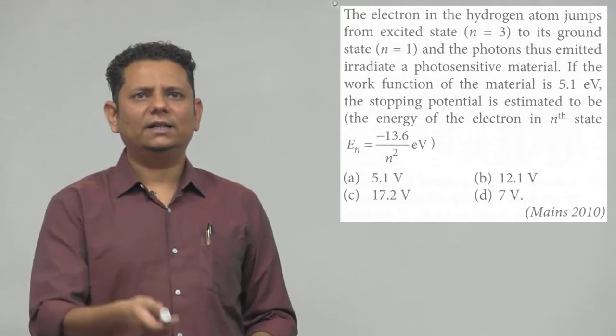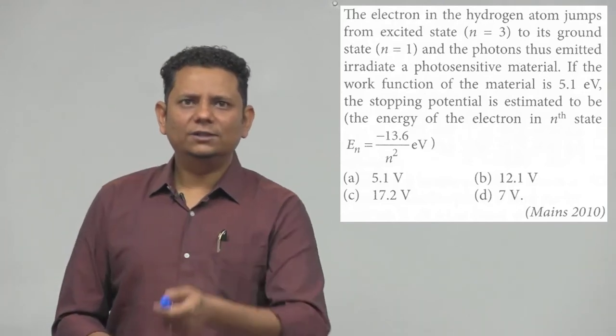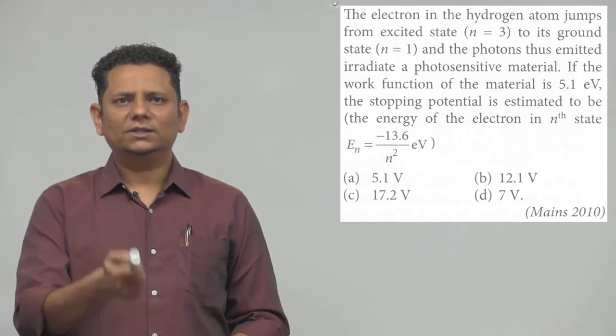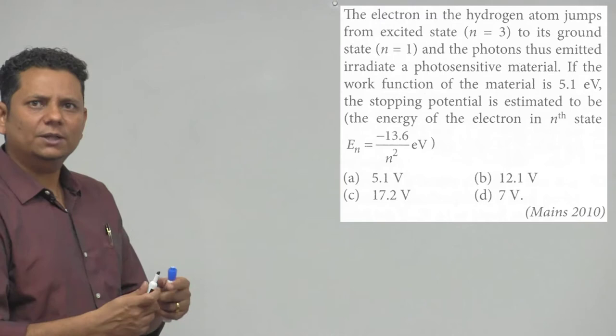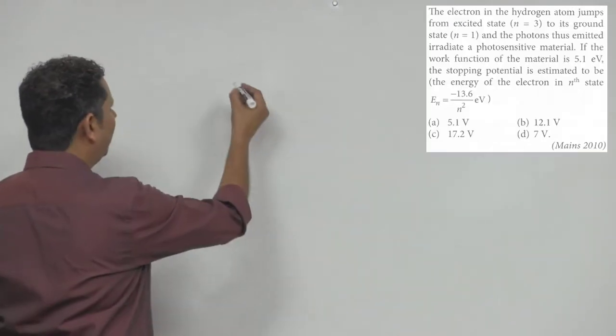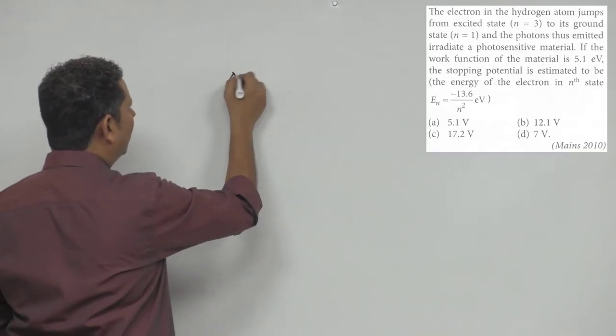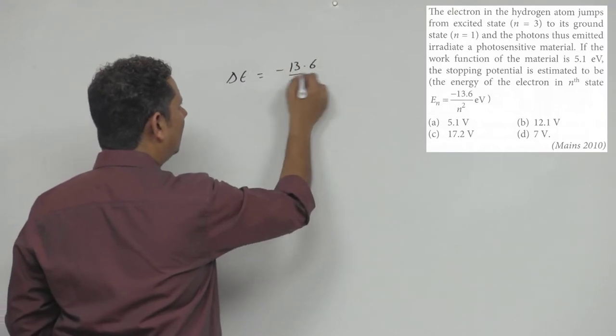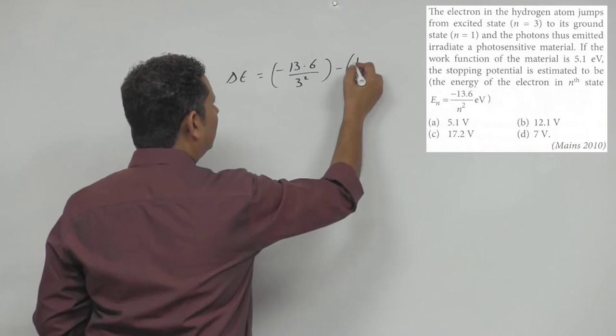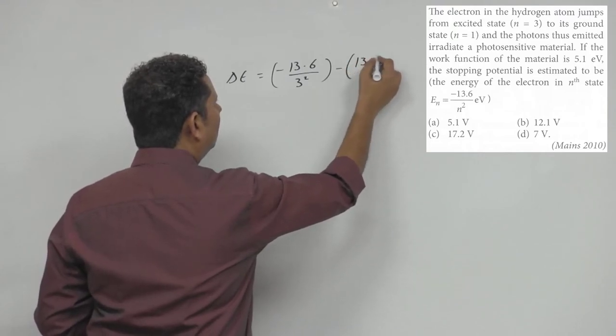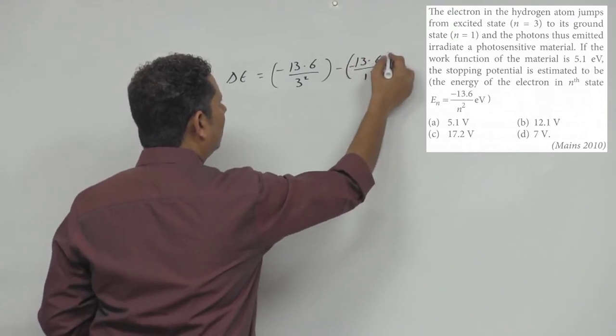Now, the energy of the electron at n equals 3 is minus 13.6 divided by n squared electron volts. The energy difference delta E is equal to minus 13.6 divided by 3 squared minus 13.6 divided by 1 squared.